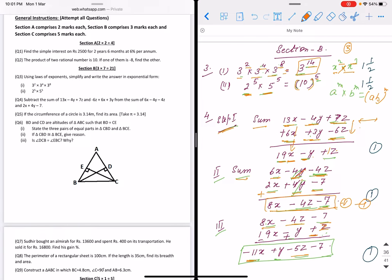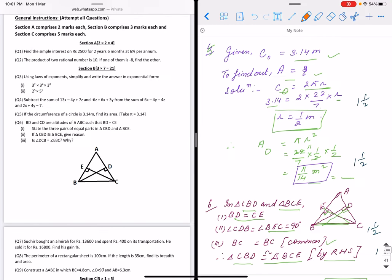Question number five: Circumference of circle is given as 3.14, and we have to find out the area. Circumference is 2πr, so we find r = 1/2 meter. We put the formula A = πr². Substituting the value, it is 11/14 or we can find it in decimal also.